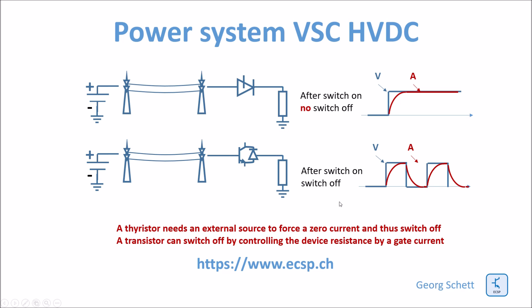When you have an active switch — an IGBT or transistor — the transistor can be switched on and the current flows, but then it can also be switched off again just by reducing the gate voltage from a few volts to zero. The resistance of the switching element then increases to close to infinite and the current goes back to zero very quickly. Therefore, with VSC you can synthesize an oscillating output waveform, which is not possible with the thyristor.